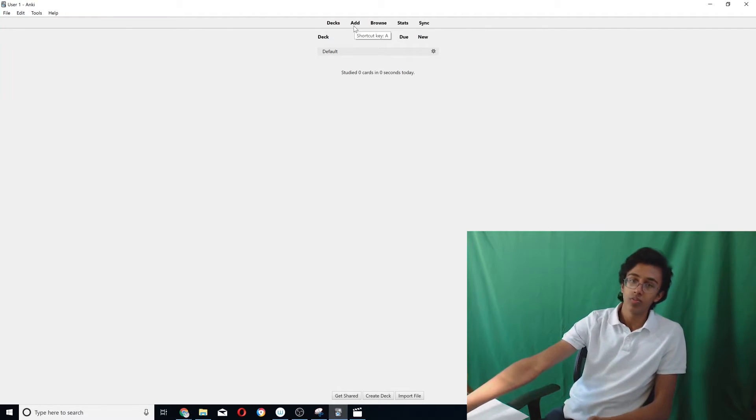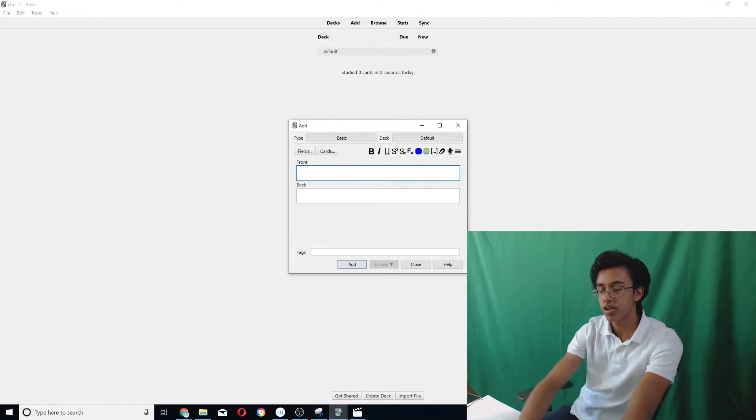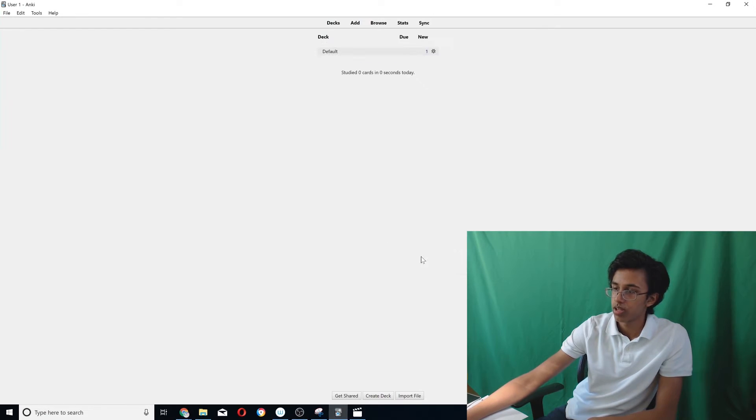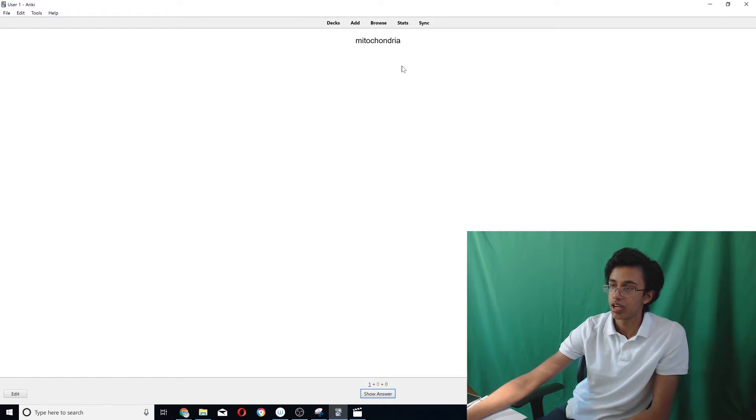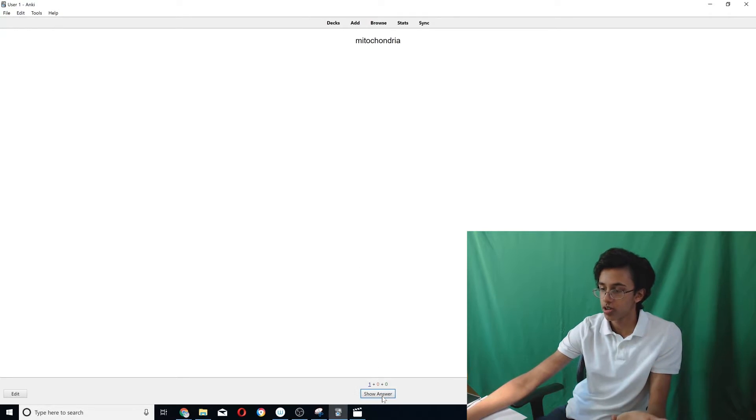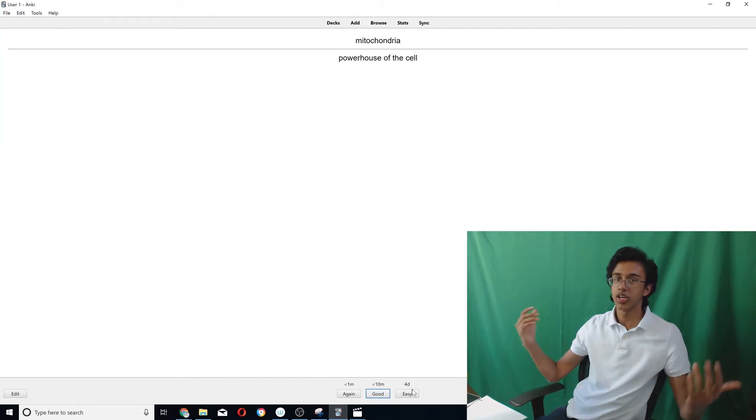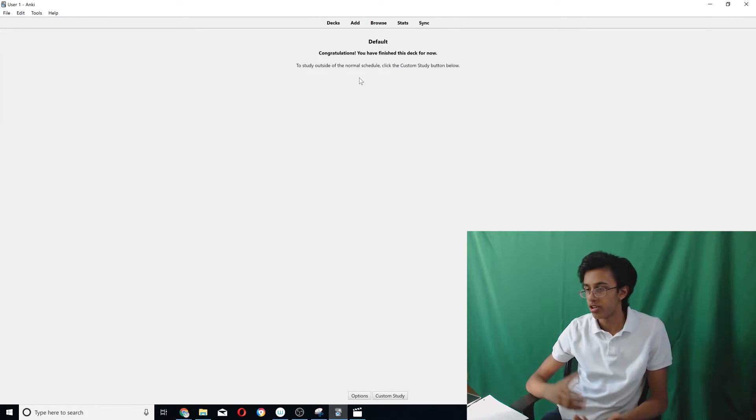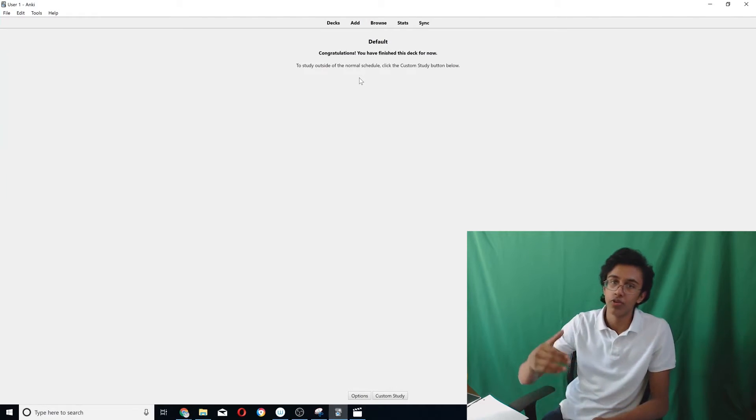So basically what you do is you make flashcards. So you click add and then let's say I want to say mitochondria and then powerhouse of the cell, add. And then I close this and then it says, hey, we've got one new card. So we click on the deck and then it says study now. And we click study now and it shows you the front of the flashcard. Then you click show answer. And then you can say, do we want it again? Like, did I get it wrong? Was it kind of hard but not too bad? Or was it easy for me? It was easy for me. It'll give me four days later because there's no point showing it to me again if it was easy for me. And then if you finish studying your deck for today, it'll show you this screen and you're good. Every day, it'll just bring in new cards and you review them every single day.